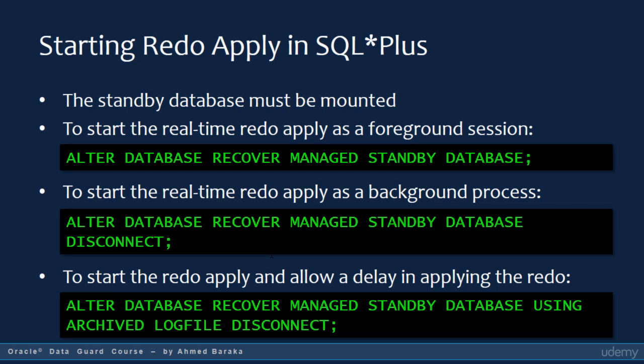The Redo Apply process can be issued in a foreground session or as a background session. If you start it as a foreground session, control is not returned to the command prompt until the process is stopped by another session. When run as a background process, it will create its own session, different from the session you used to start it. In most real-life scenarios, you will always need to start the Redo Apply services in the background.